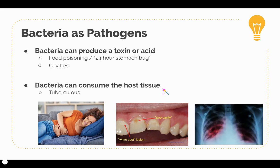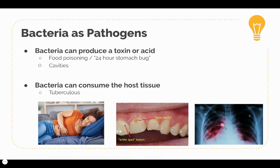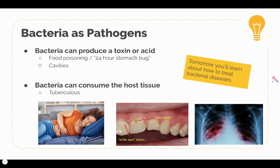The second way bacteria can cause disease is by consuming the host tissue. An example of this is tuberculosis, where the bacteria eats away at lung cells, making it very difficult to breathe and potentially fatal if not treated. Tomorrow you'll learn about how to treat these bacterial diseases when you look at antibiotics.